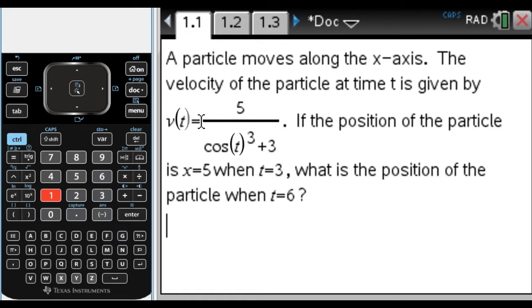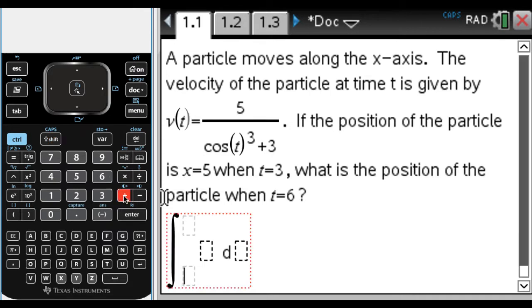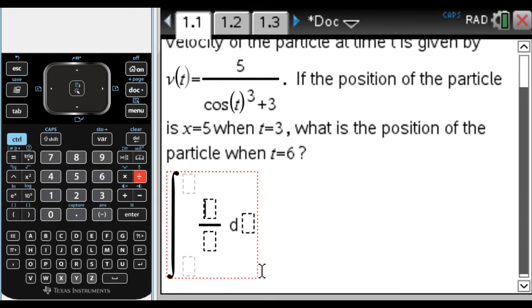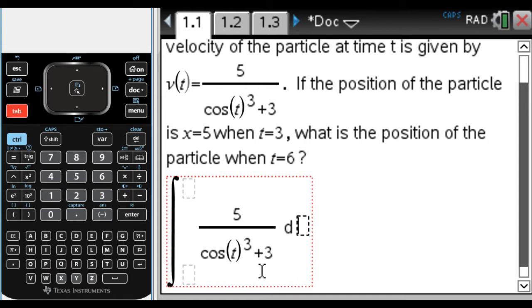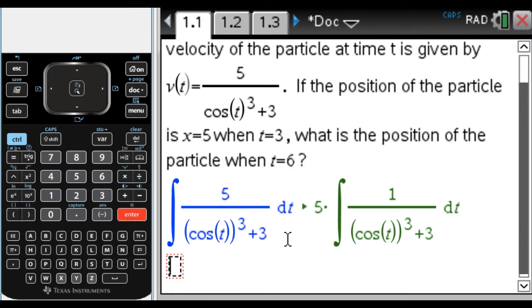There's an issue here though, because if we try to integrate v(t) by itself, which I'm going to try here. Let's go shift and then plus - that's a shortcut to get to the antiderivative template. I'm not going to fill in these optional fields right now. I'm just going to see if I can integrate this: 5/(cos(t)³ + 3) with respect to t. I'm going to press enter and you can see what happens.